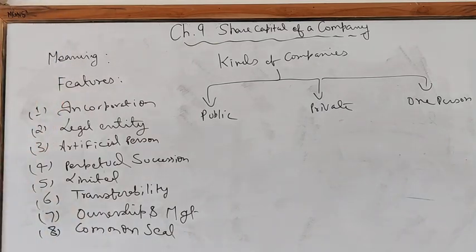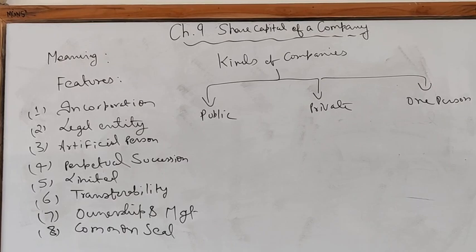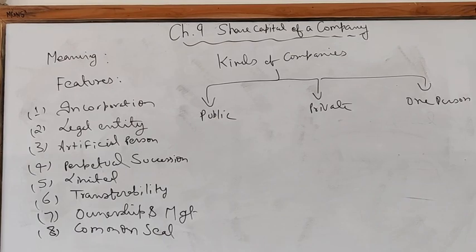A private company restricts the right to transfer its shares, its maximum number of members is limited to 200, and it prohibits any invitation to the public to subscribe for any securities of the company. A public company is one which is not private, has a minimum paid-up capital as prescribed, and includes a private company being a subsidiary of a public company.